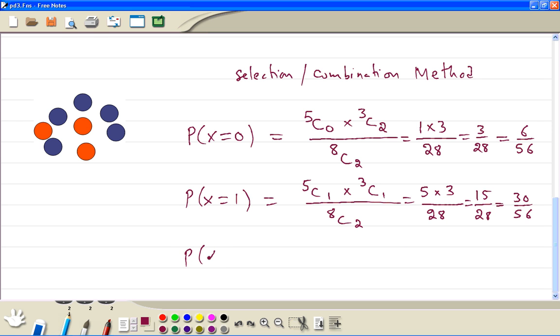Then finally, x equal to 2. We're choosing 2 blues from 5. So 5c2 times 3 red ones. We're choosing 0. Divided by 8c2. So 5c2 is 10. 3c0 is 1, so out of 28. So the answer is 10 out of 28.